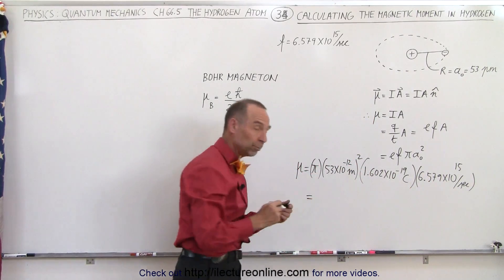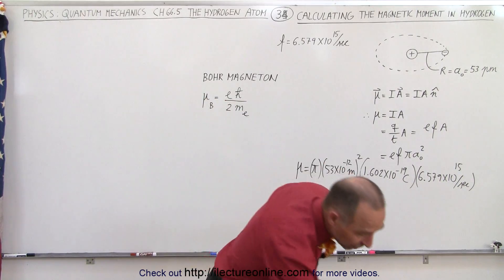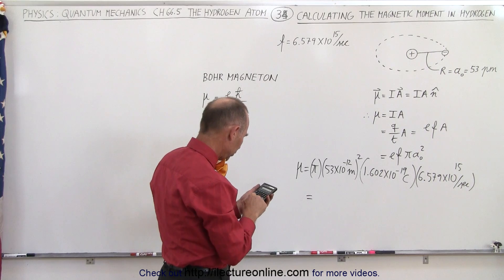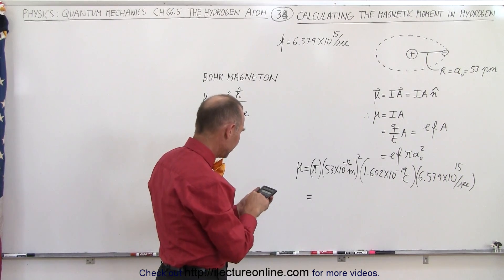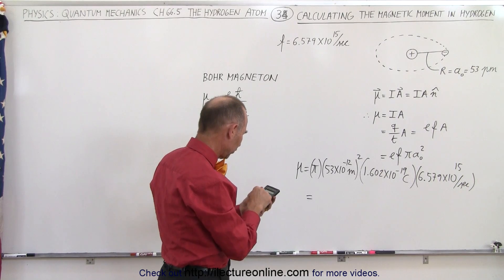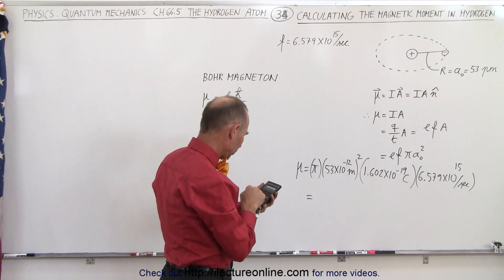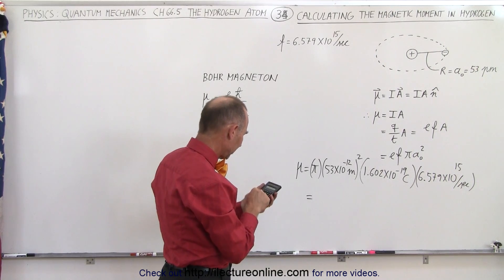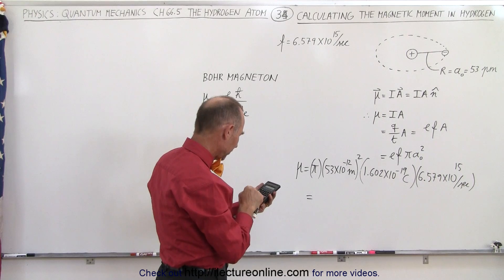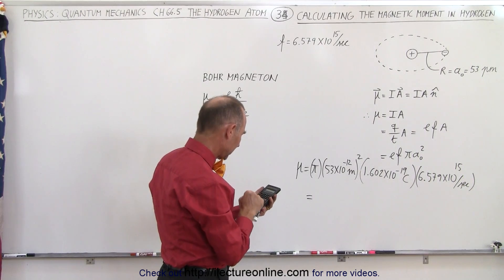And that should give us the magnetic moment of an electron in a hydrogen atom. So let's see here, that is equal to the number pi times 53e to the 12th minus squared times 1.602e to the 19th minus times 6.579e to the 15th.